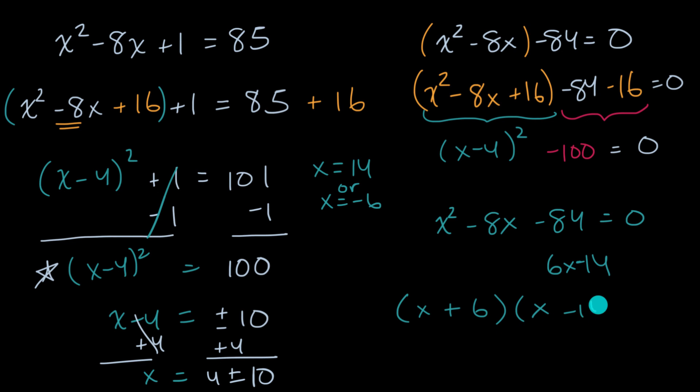x minus 14 is equal to zero. And so the product of two things is equal to zero. That means if either of them is equal to zero, that would make the entire expression equal to zero. So we could say x plus six is equal to zero, or x minus 14 is equal to zero. Subtract six from both sides here. We get x is equal to negative six, or add 14 to both sides here, x is equal to 14. Exactly what we got up here.